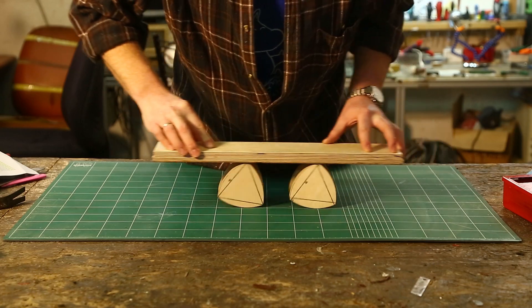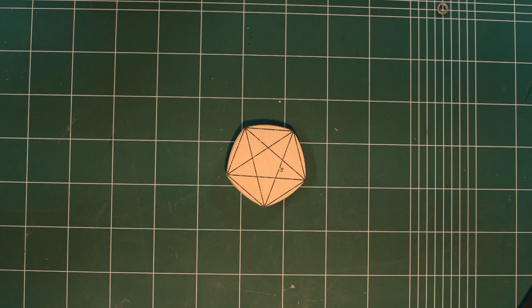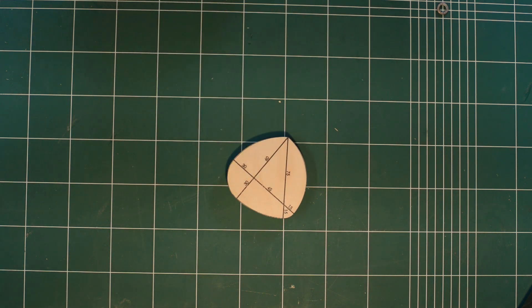The construction of the Reuleaux triangle could be easily generalized into any regular polygon with an odd number of sides, like this pentagon for example. And even non-regular polygons can be constructed to form a shape of constant width, like this right triangle here.